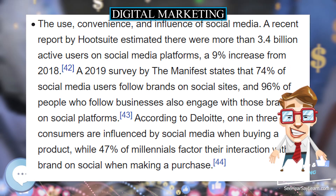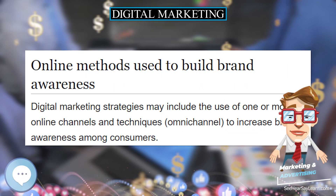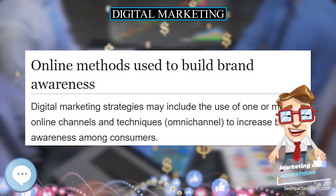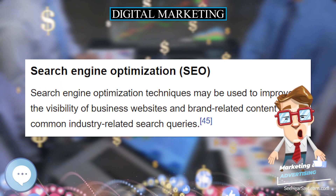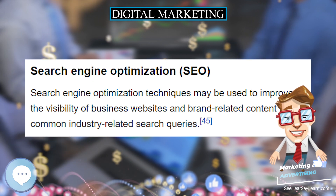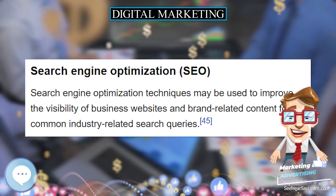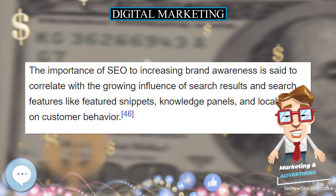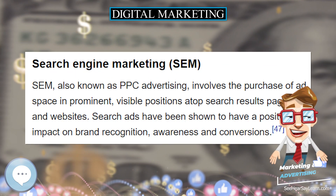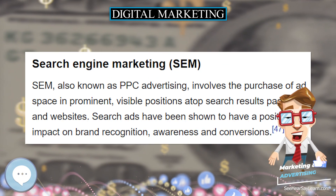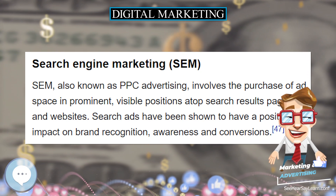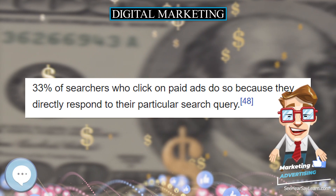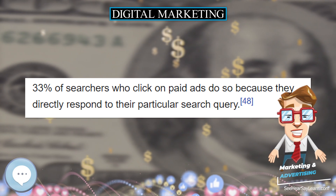In the 1980s, the storage capacity of computers was already big enough to store huge volumes of customer information. Companies started choosing online techniques, such as database marketing, rather than limited list brokers. These kinds of databases allowed companies to track customers' information more effectively, thus transforming the relationship between buyer and seller. However, the manual process was not as efficient.